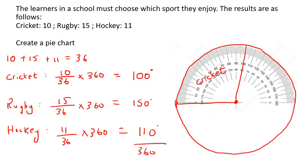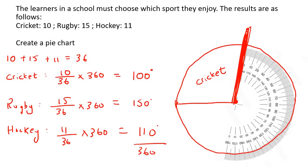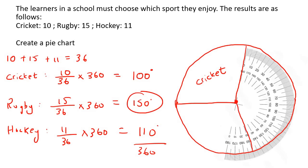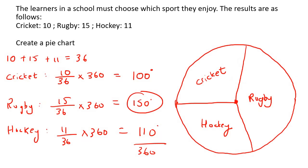Now, the line you just drew becomes your new starting position. Place the protractor on that line with zero aligned, and measure 150 degrees for rugby. We don't have to do extra measurements for the last one — because if we've done everything correctly, hockey should fit into the remaining space and it would be 110 degrees. You could label each section: 100 degrees, 150 degrees, and 110 degrees.